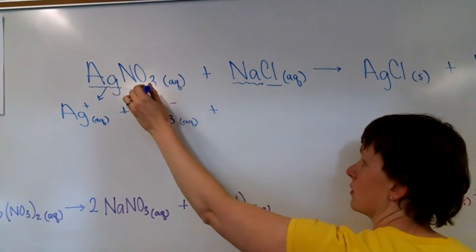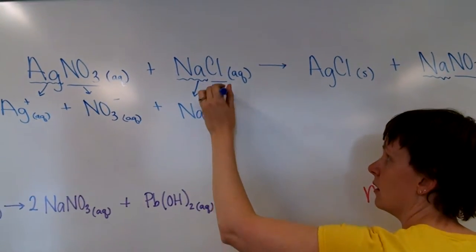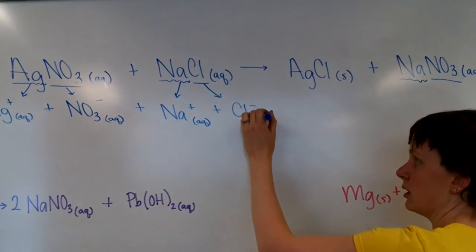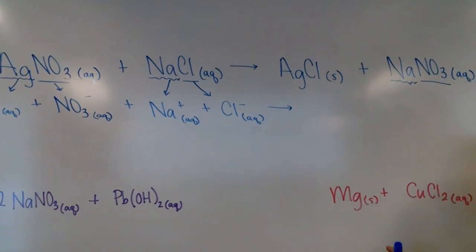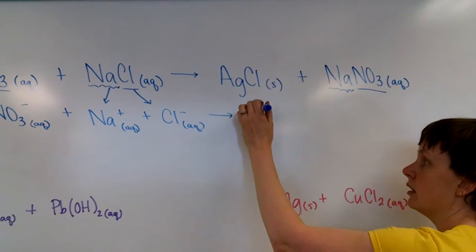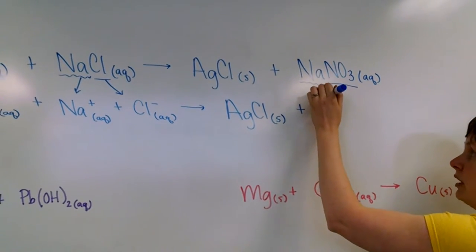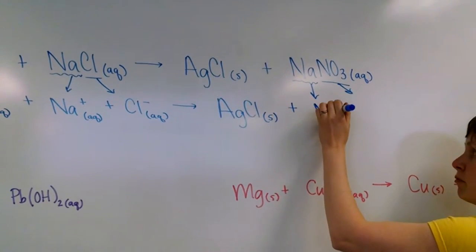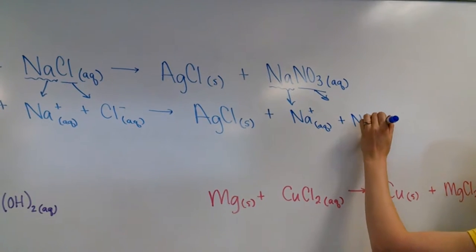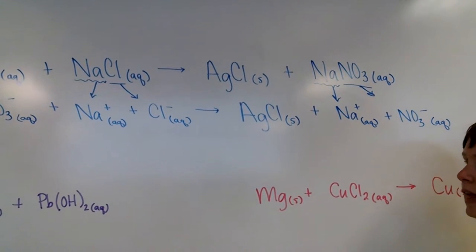Next compound — we just split it up. Sodium is in group one, so it has a plus one charge, aqueous. And chloride is a halogen, minus one charge, aqueous. On this side of the arrow, solid does not split up — only aqueous splits up into its ions. So AgCl we copy exactly as we saw it. Then we split our final compound: sodium plus one charge aqueous, and nitrate minus one charge aqueous. This is called a complete ionic equation.